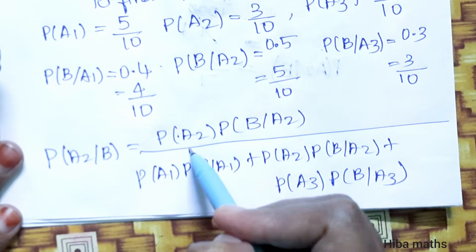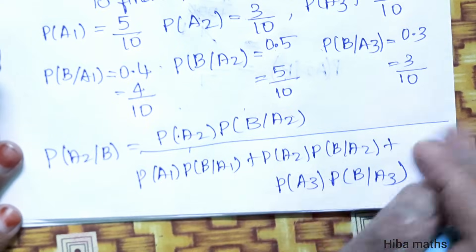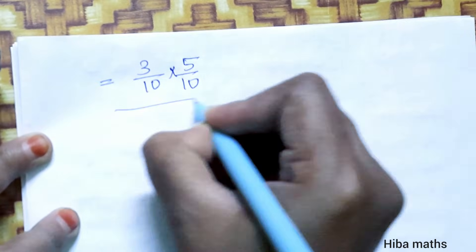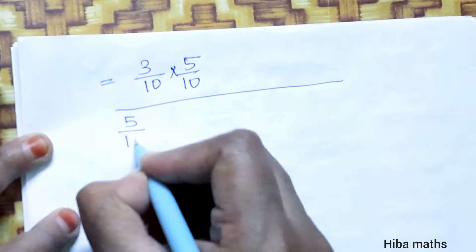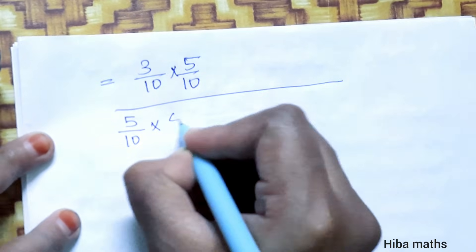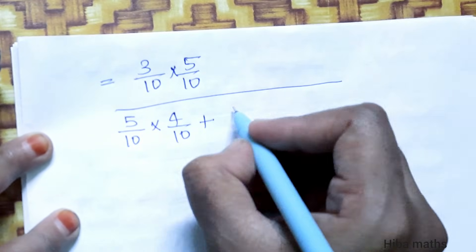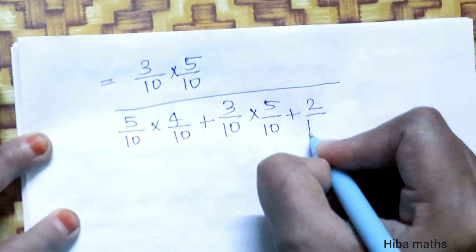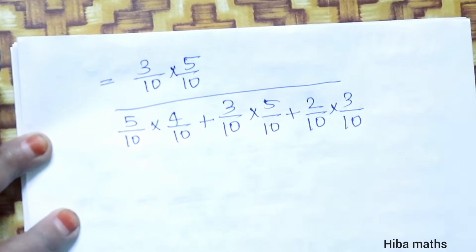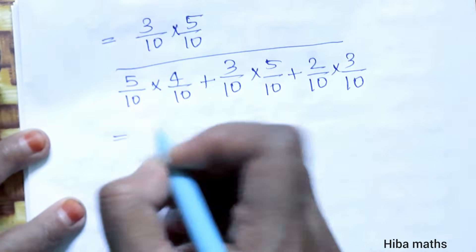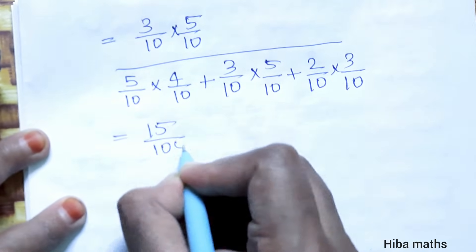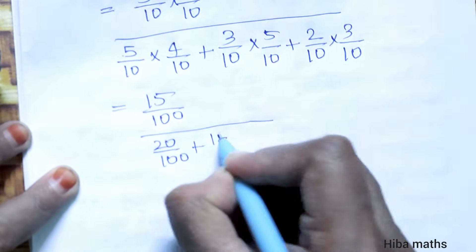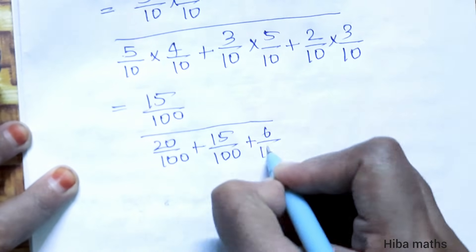Substituting: numerator is (3/10) × (5/10) = 15/100. Denominator: (5/10)×(4/10) + (3/10)×(5/10) + (2/10)×(3/10) = 20/100 + 15/100 + 6/100 = 41/100.